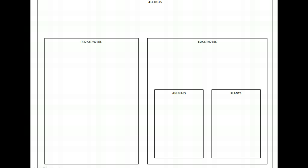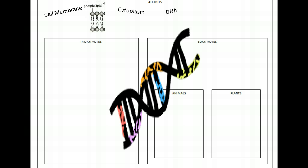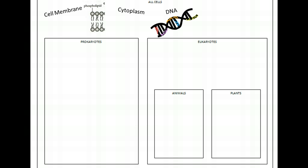Let's start out first with what all cells have. All cells have a cell membrane — that's your phospholipid bilayer that keeps what needs to be inside in and what needs to be outside out. Cytoplasm is the gooey stuff. DNA carries the genetic information; in order for cells to pass information on to next generations, we have to have DNA. And finally, ribosomes are found in all cells — these are our little protein factories that create the enzymes and other structures that your cells need in order to survive.